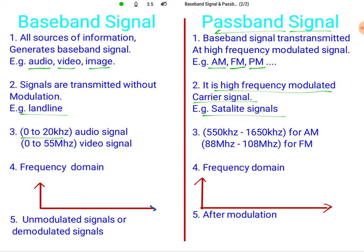For baseband signals there are different types: audio signal and video signal. The audio signal frequency range is from 0 to 20 kilohertz. The video signal frequency range is from 0 to 55 megahertz.